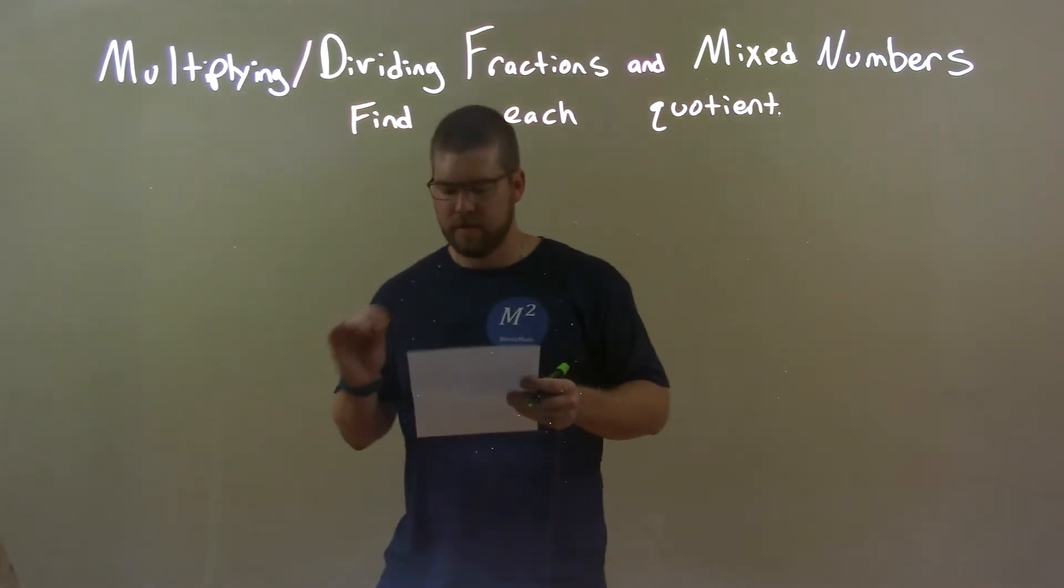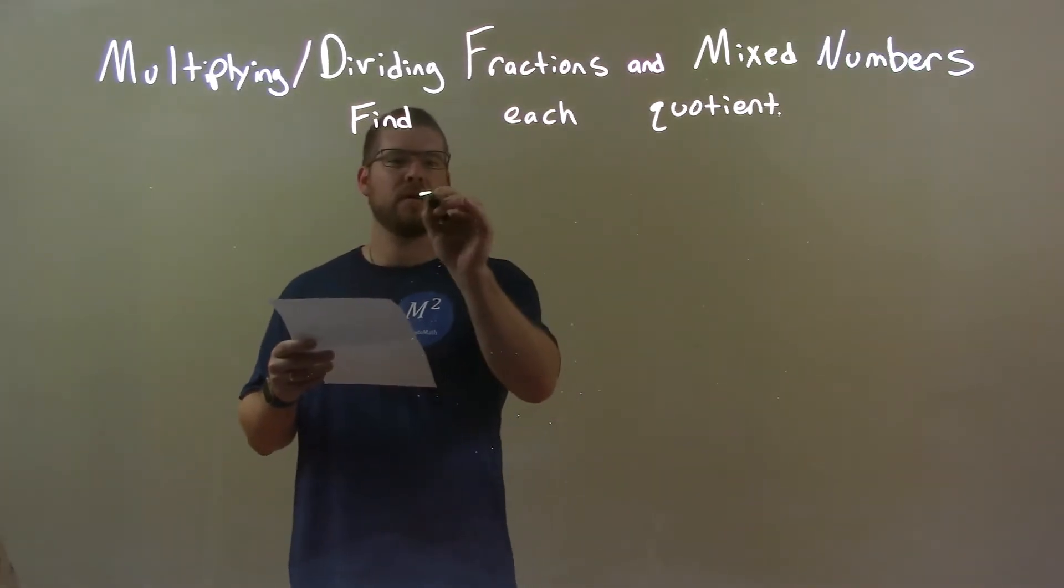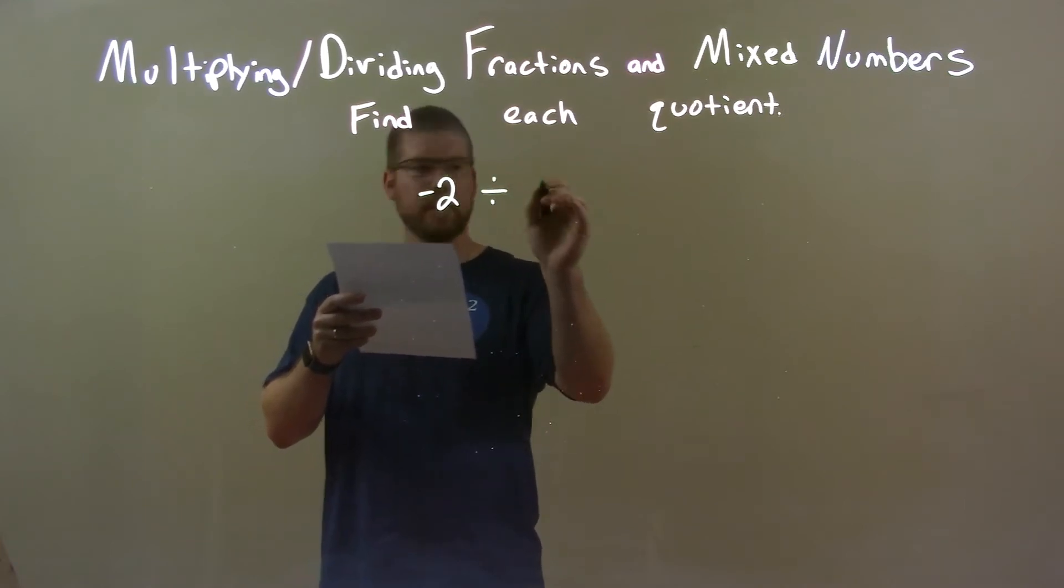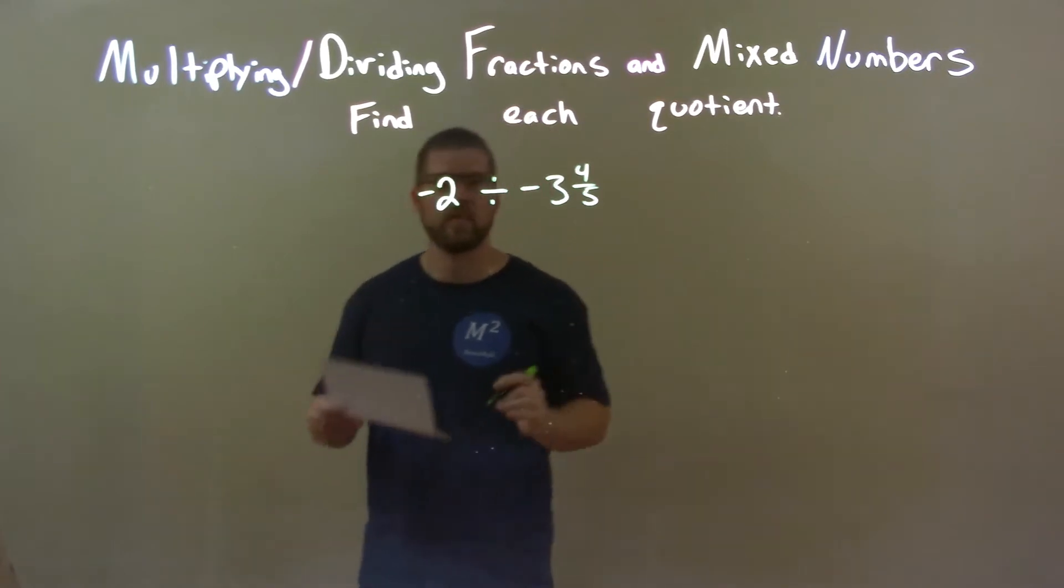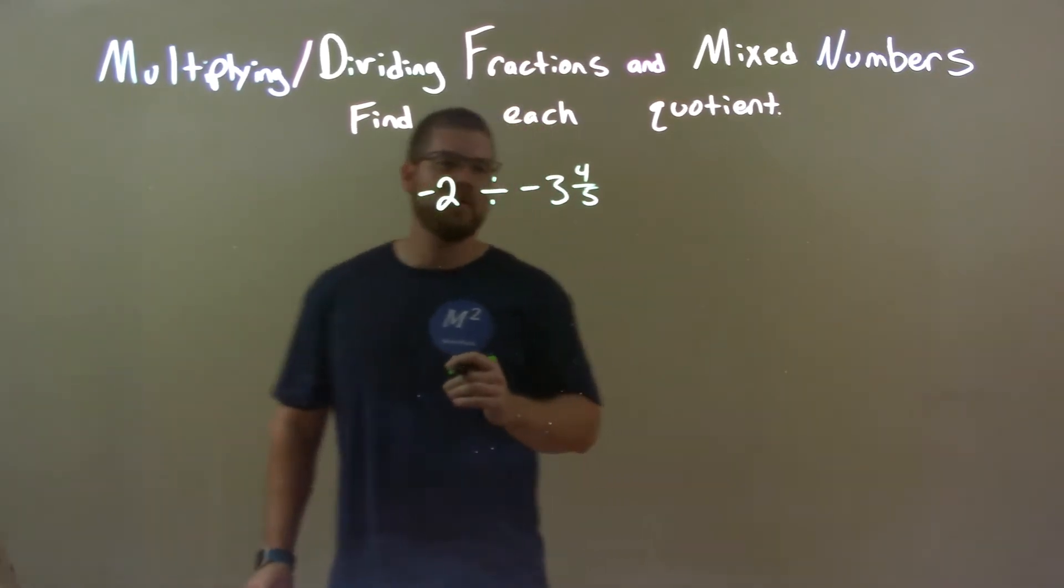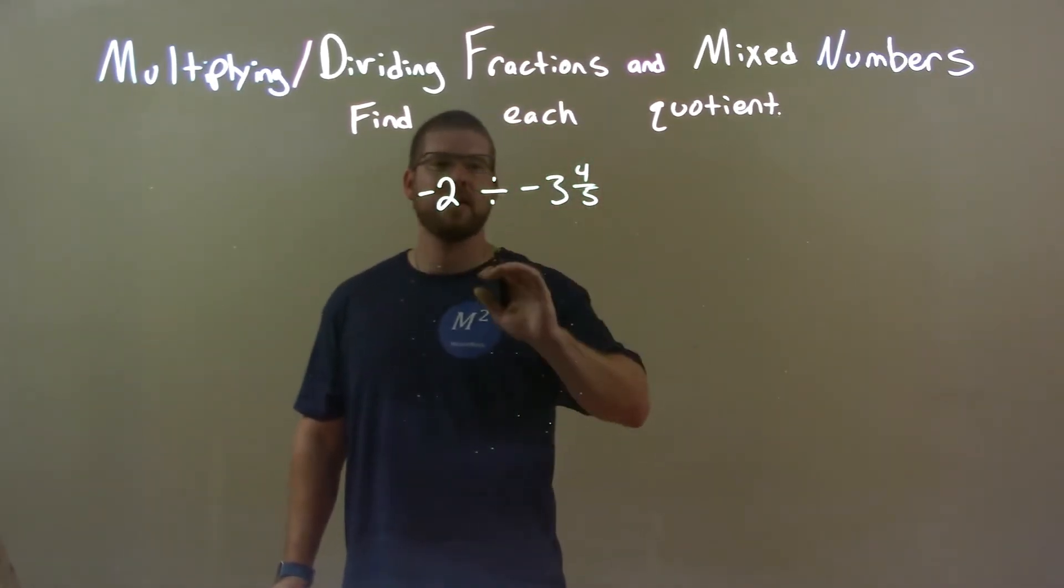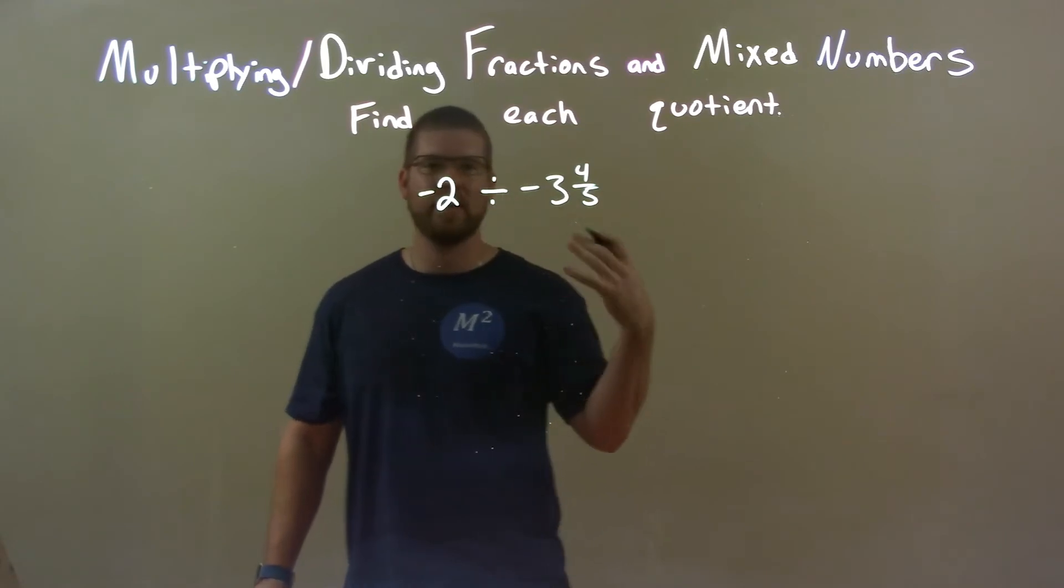So if I was given these numbers, negative 2 divided by negative 3 and 4 fifths, the first thing I want to do is convert both of these into improper fractions.